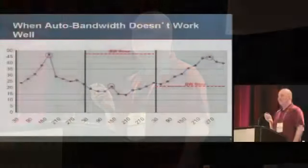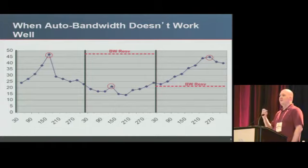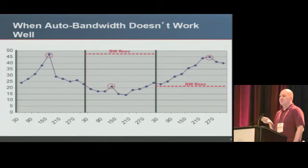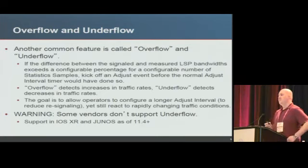Here's where auto bandwidth works well: you look at your five-minute or ten-minute sample, see bandwidth changed, make a reservation, and mostly things work. Where it doesn't work well is with highly bursty traffic — you might increase your reservation just as traffic falls down, then lower it right as traffic goes up. You don't want a long idle time; you want rapid reaction to changing traffic conditions.